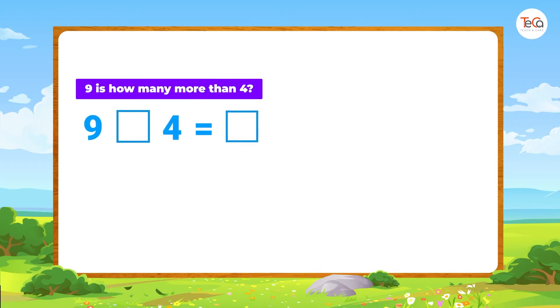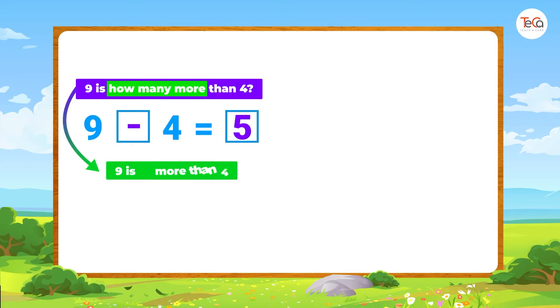Can you do it? Let's see if you have the correct answers. First: nine is how many more than four? To find how many more, we find the difference between the two numbers. Here we subtract four from nine to get five. So nine is five more than four.